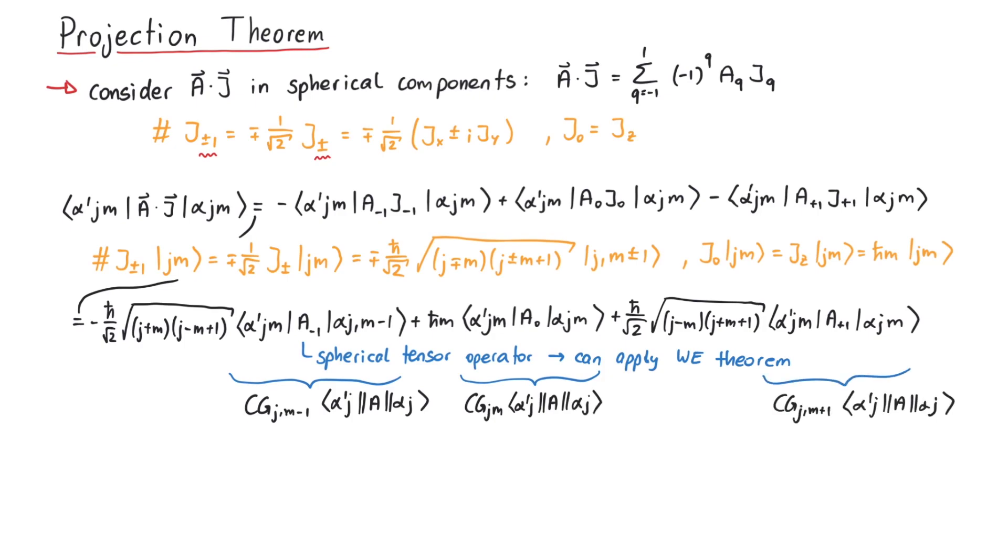Now comes an important observation. Since the operator A times J that we started with is a scalar operator, the result cannot depend on the quantum number M. Since the reduced matrix elements do not depend on M anyway, this means that the M dependence in the coefficients must cancel each other, such that we can write everything as some constant that may depend on J but does not depend on M or the vector A, times the reduced matrix element of A.